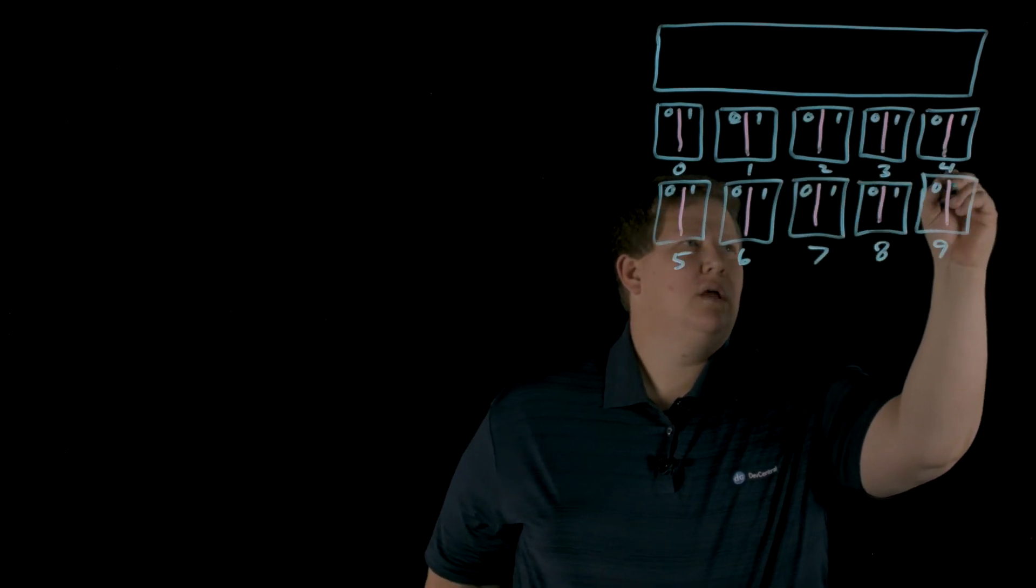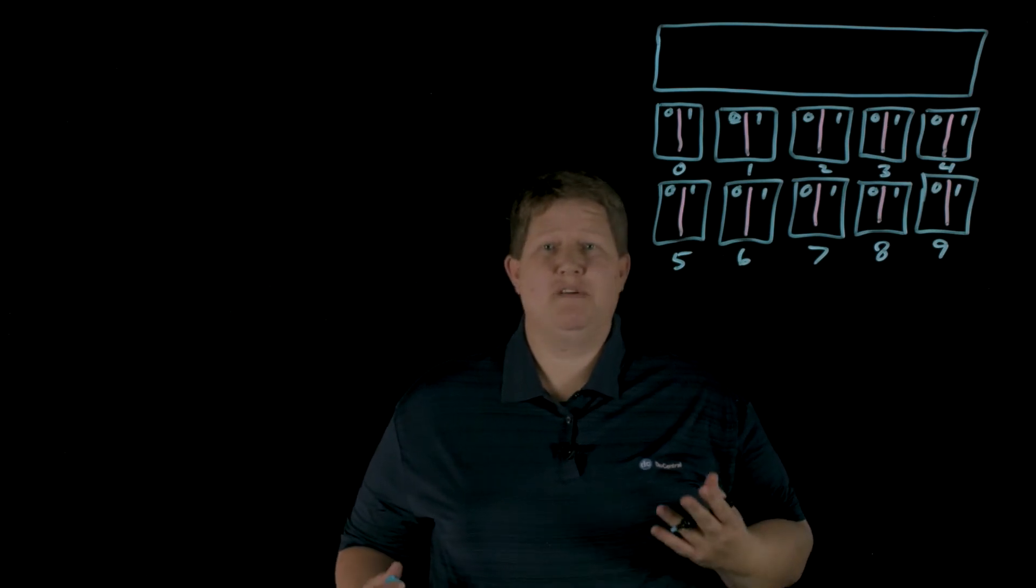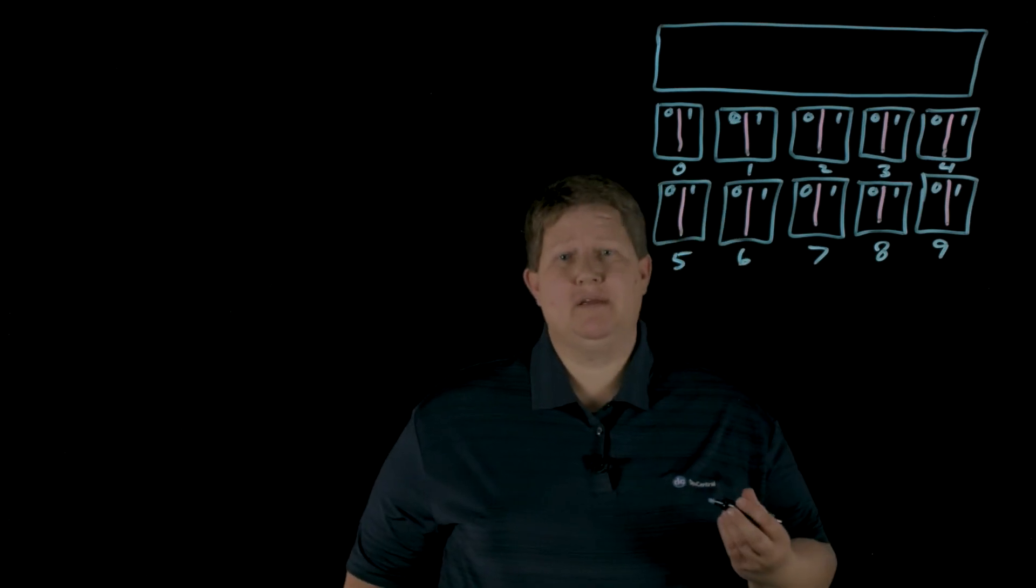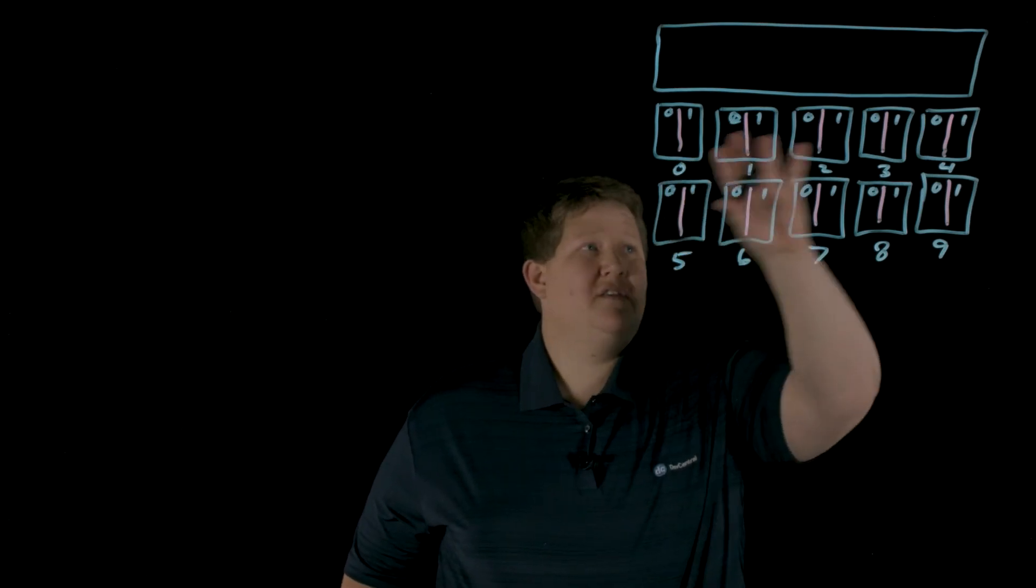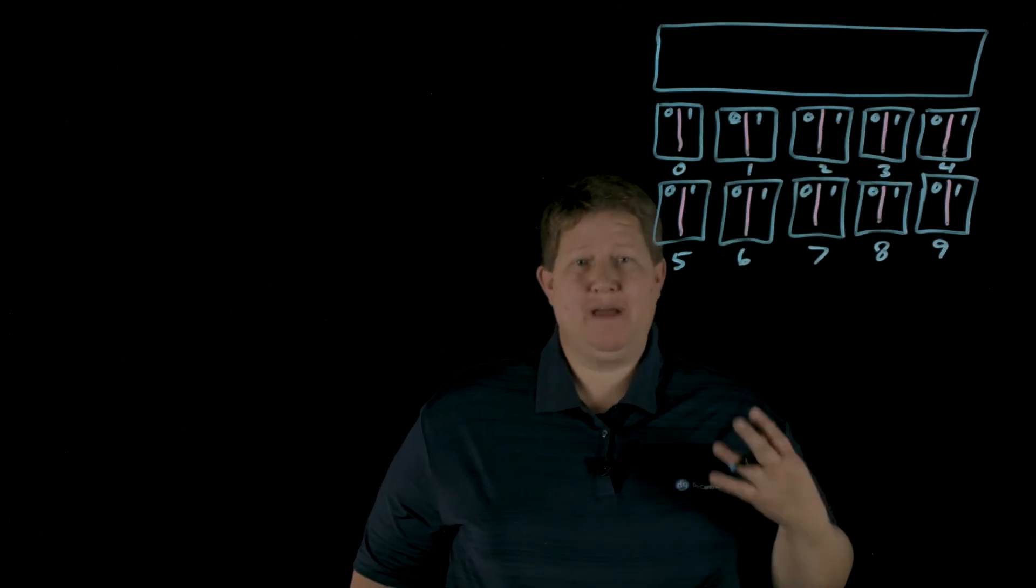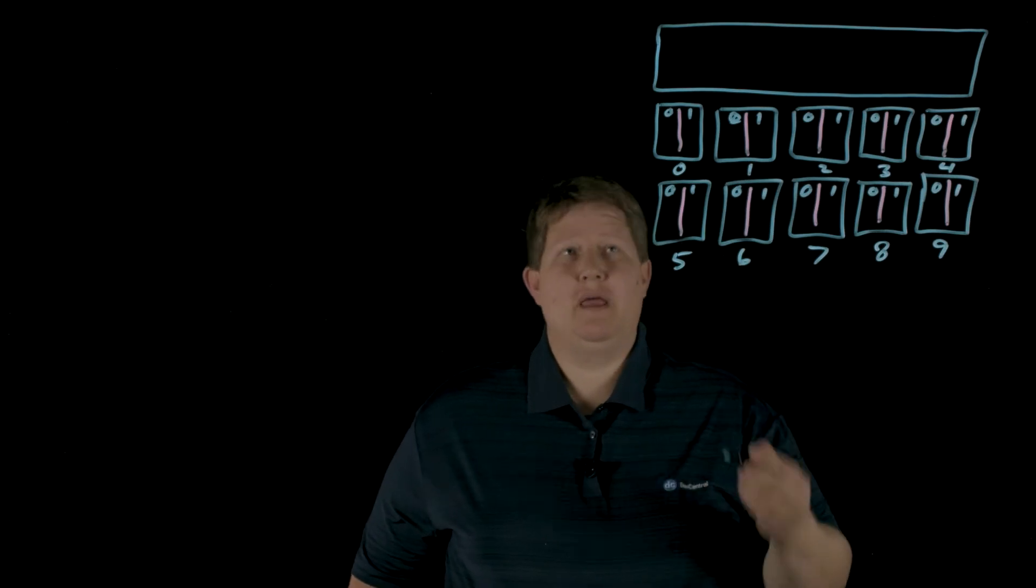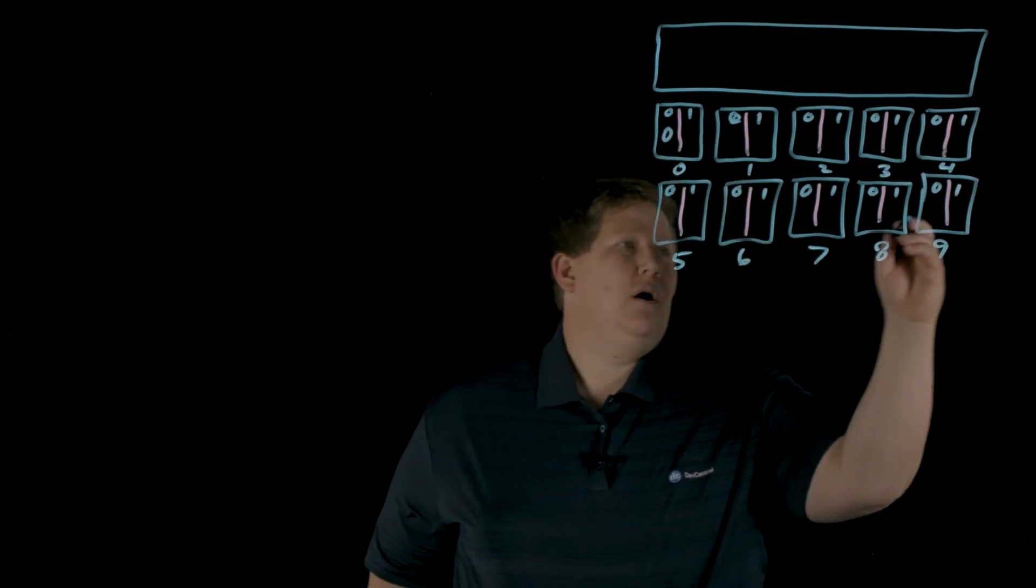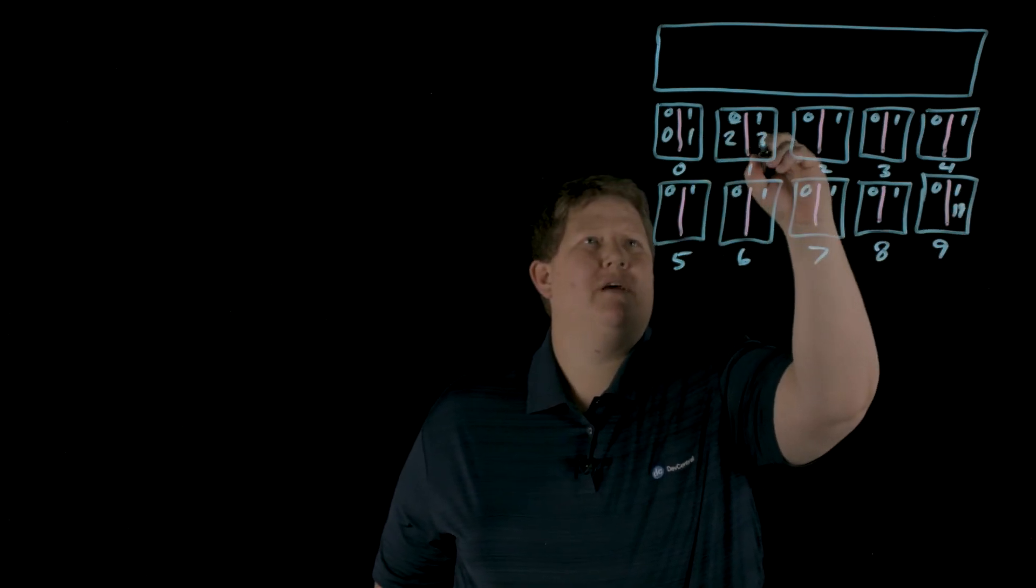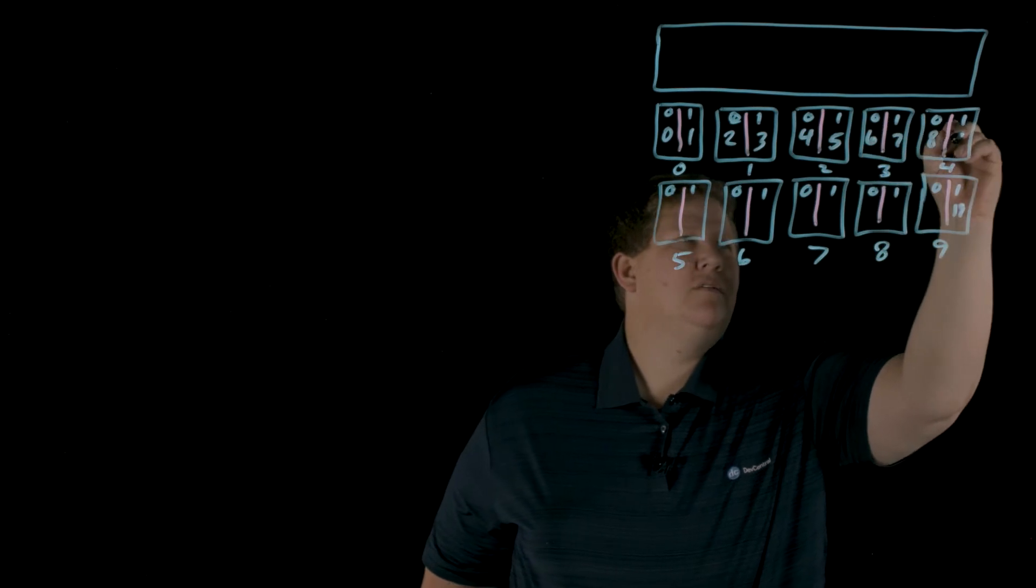If you look at TMOS before 11.5, each hyper-thread had a separate TMM running. And so in this case, because there's two threads per core and there's 10 cores, you would have 20 versions of TMM running in this system. And so they would be labeled 0 all the way through 19.